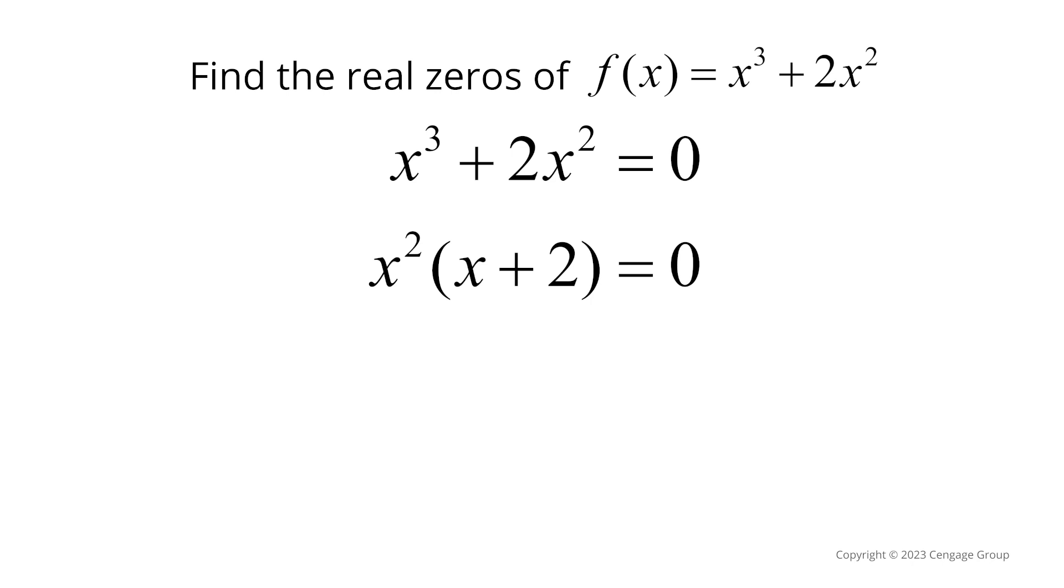Now we can set each factor equal to zero. So we get x squared equals zero and x plus 2 equals zero.